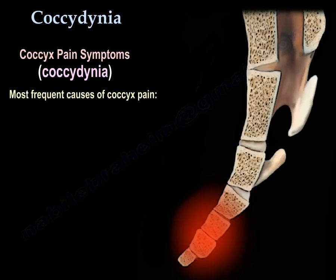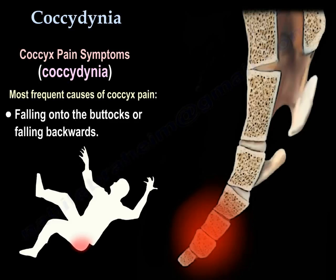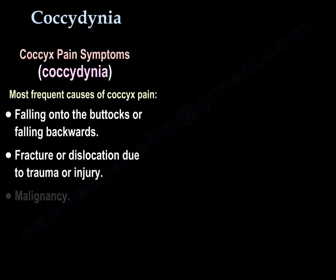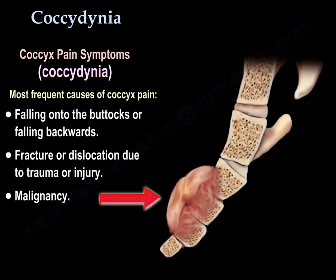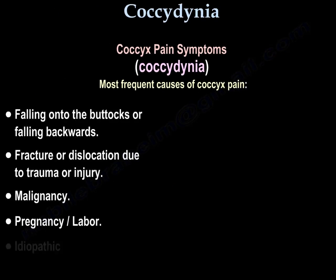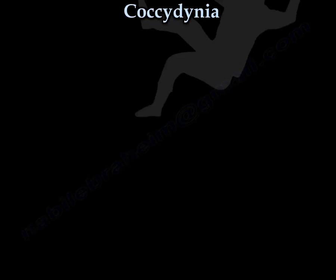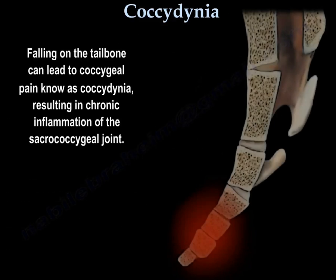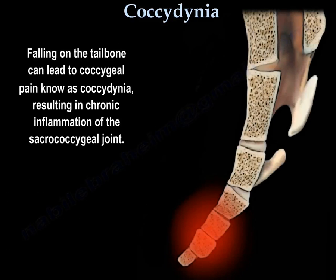The most frequent causes of coccyx pain are falling onto the buttocks or falling backwards. Fracture or dislocation due to trauma or injury could also occur from malignancy. It can occur during pregnancy and labor, or the condition may be idiopathic. Falling on the tailbone can lead to coccyx pain known as coccydynia, resulting in chronic inflammation of the sacrococcygeal joint.